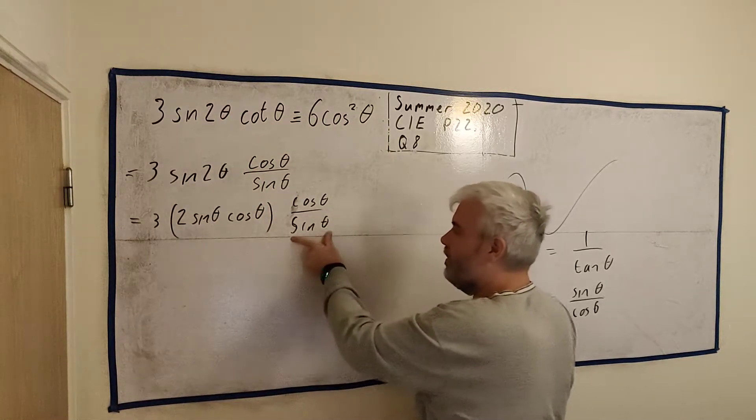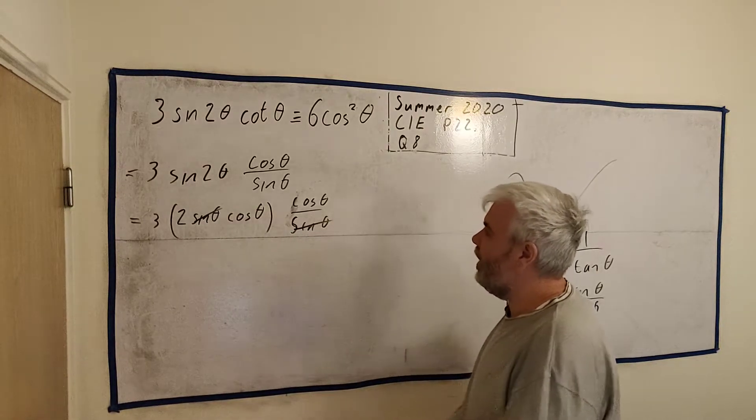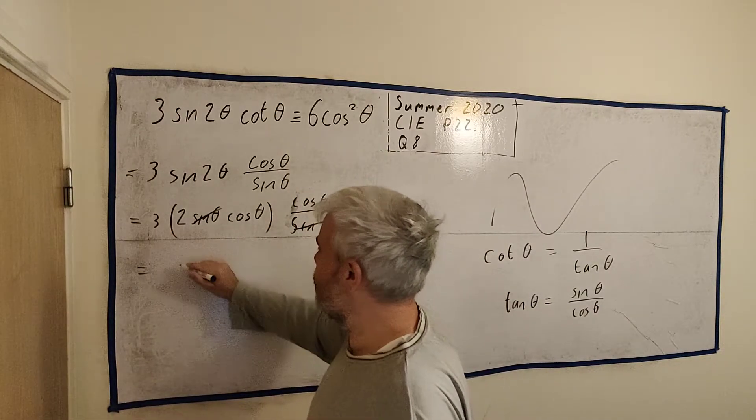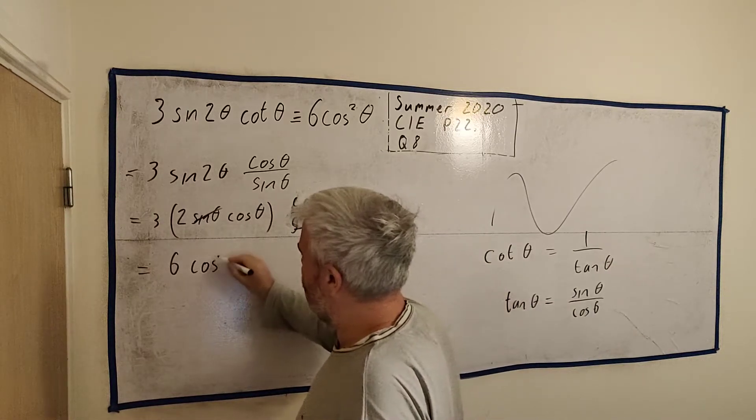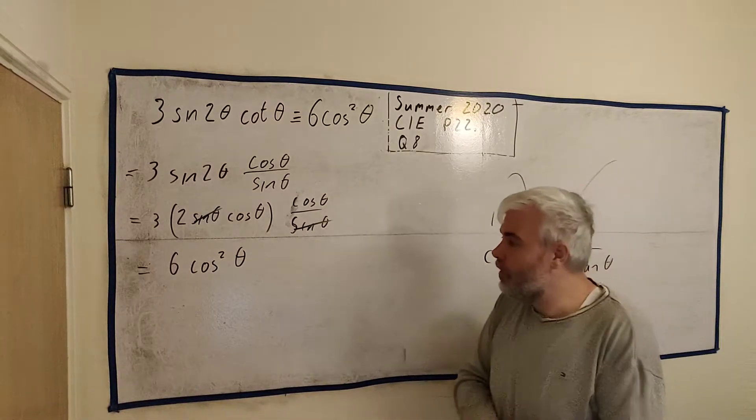We have a sine θ divided by a sine θ. They'll just cancel. That is fine. So what are we left with? We're actually left with, we're already finished here. We're left with 3 times 2 is 6. Cosine times cosine is cosine squared θ. We're left with the right hand side. So that's part A. We have shown that this is equivalent to this.